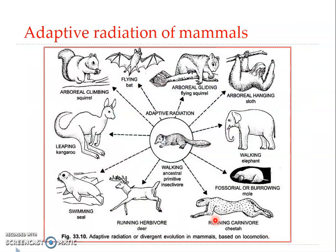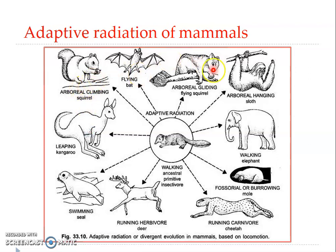Another example is the adaptive radiation of mammals. If we look at this particular group, we can see that all these are placental mammals. We can say adaptive radiation of placental mammals — excluding the kangaroo, which is a marsupial. The placental or eutherian mammals provide another classical example for the process of adaptive radiation.